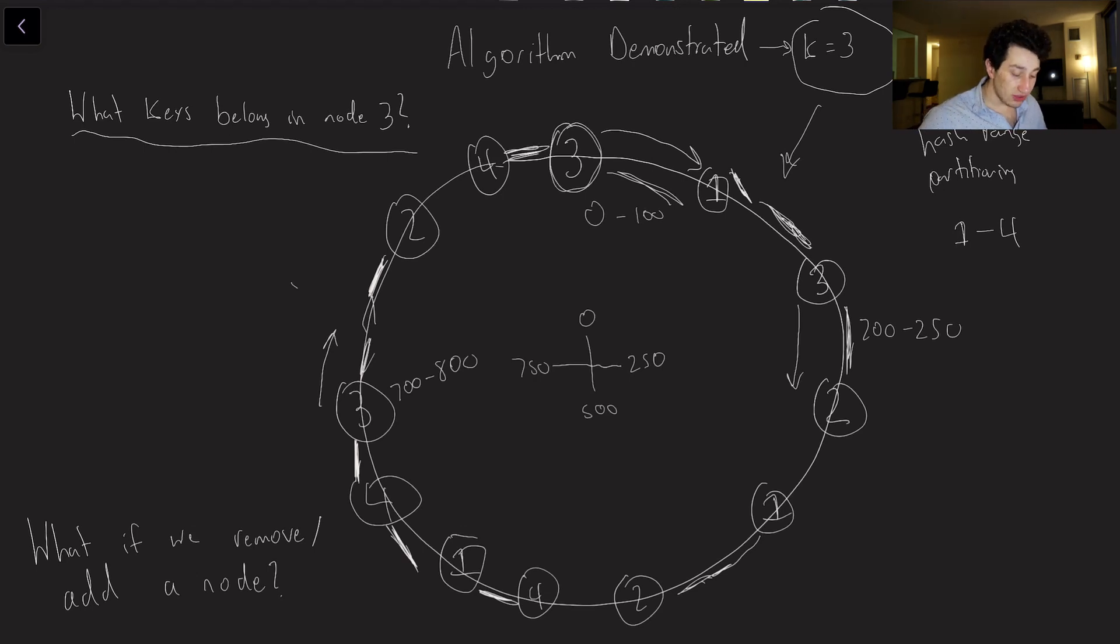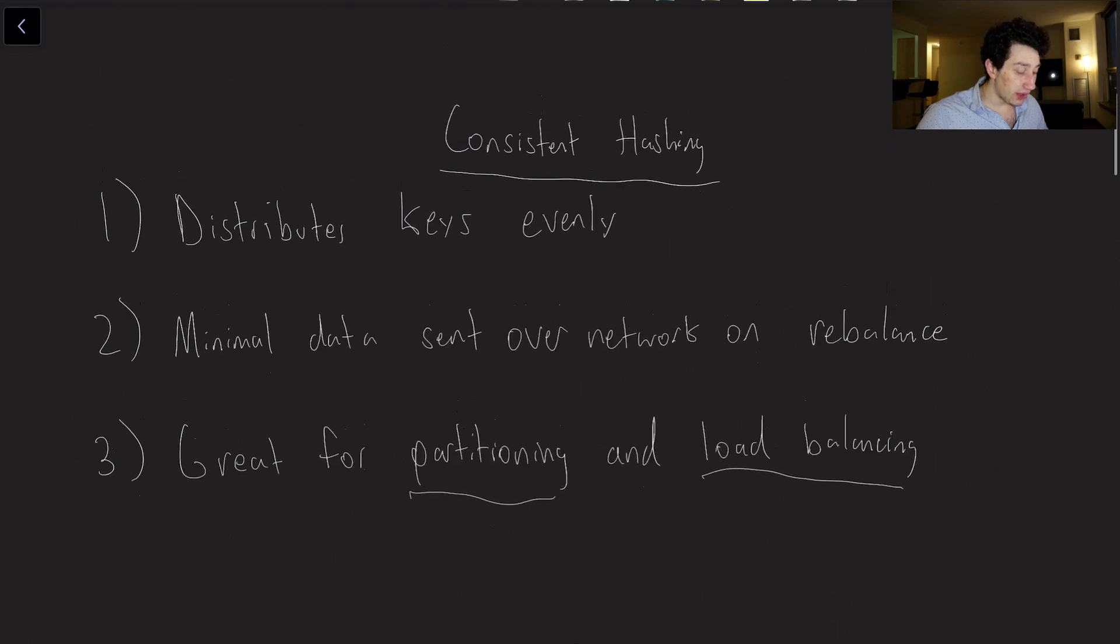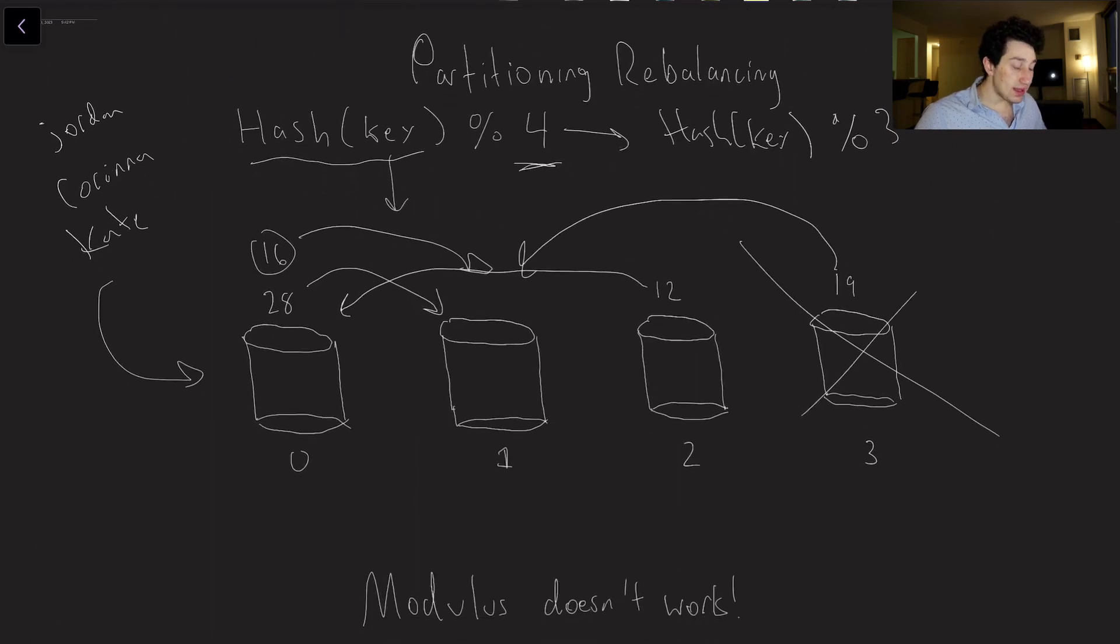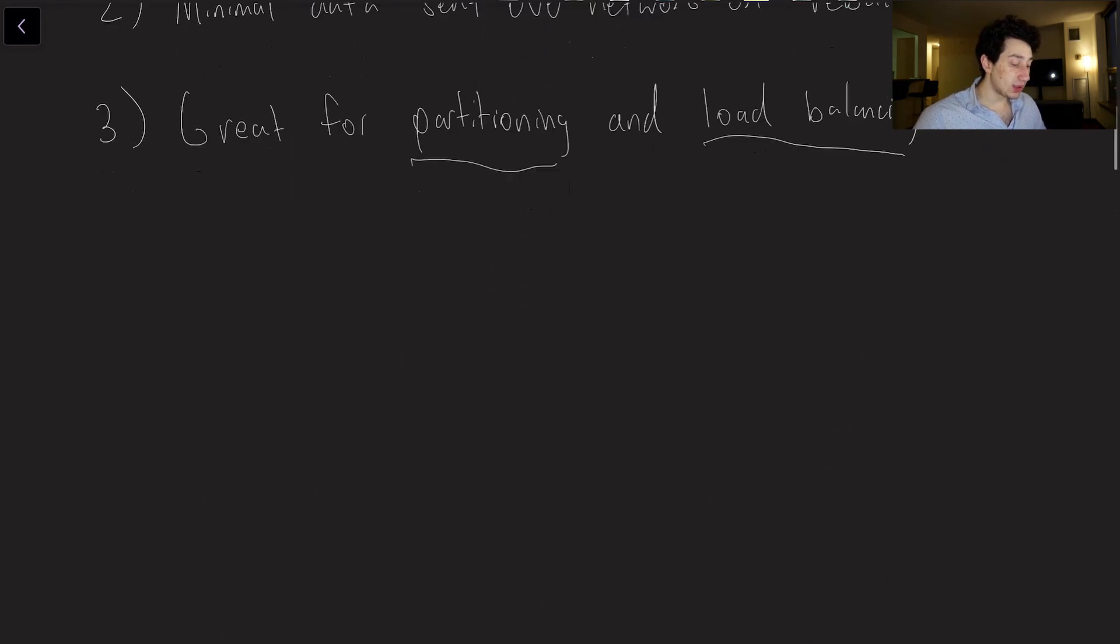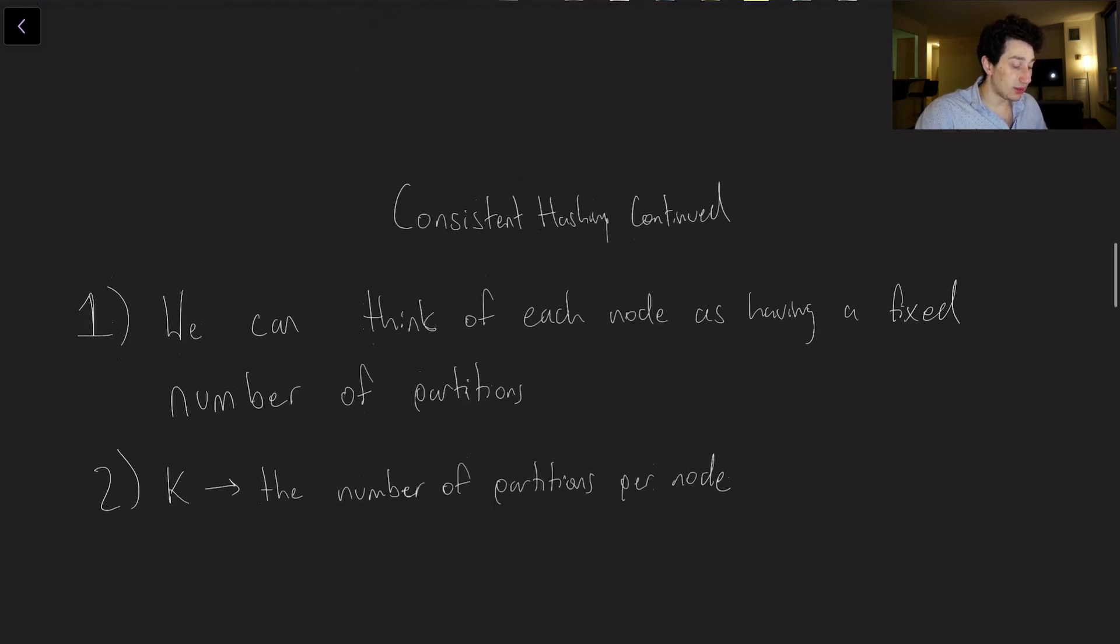So by using this consistent hashing ring, we can ensure that we're not over-rebalancing like we were in the first example. Recall that in the first example we were taking keys on nodes that weren't even really being touched and we were sending them all over the place. There's no reason to have to do that if we can avoid it, and that is what consistent hashing is accomplishing for us.